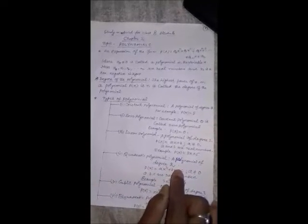Next, quadratic polynomial. A polynomial of degree 2 is called quadratic polynomial, written in the form ax square plus bx plus c, where a is not equal to 0, and a, b, c are real numbers. For example,